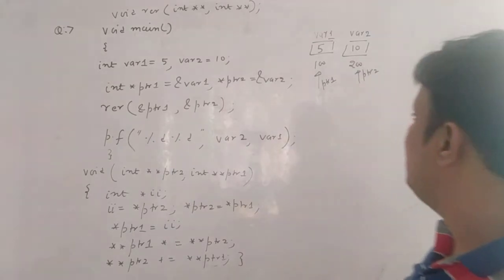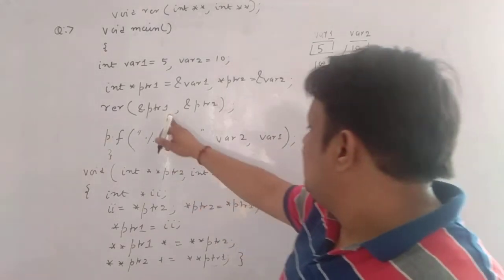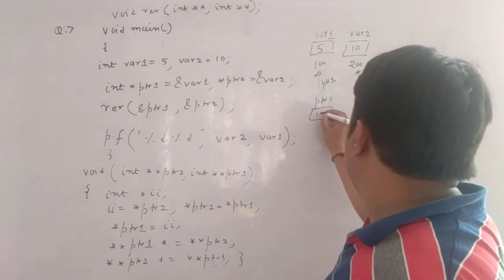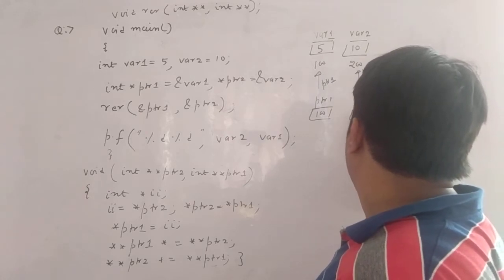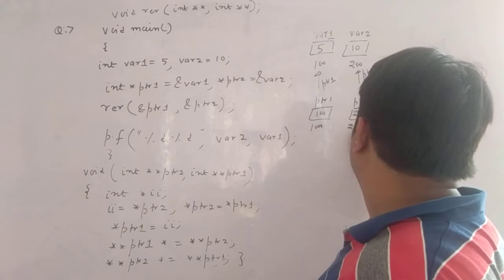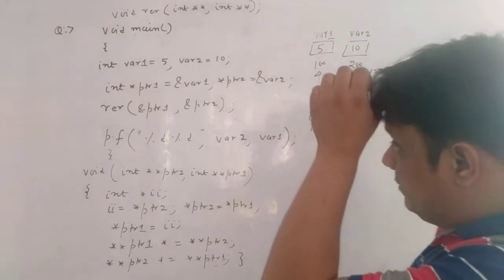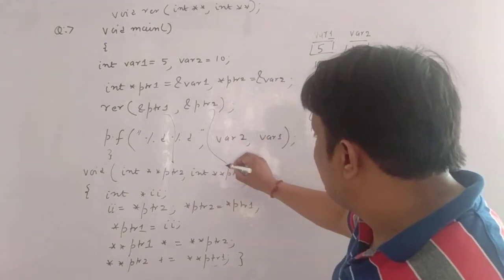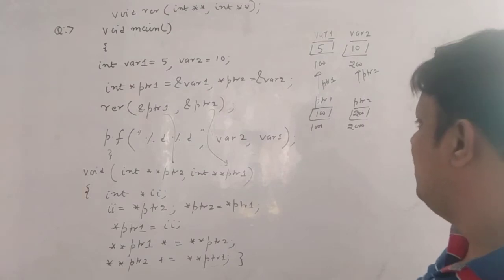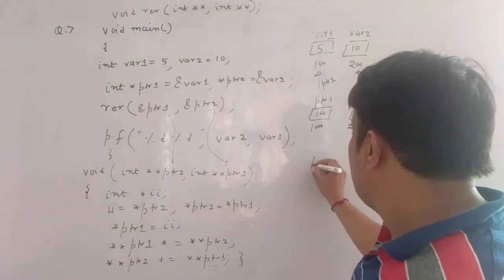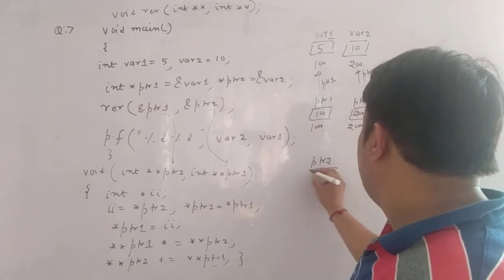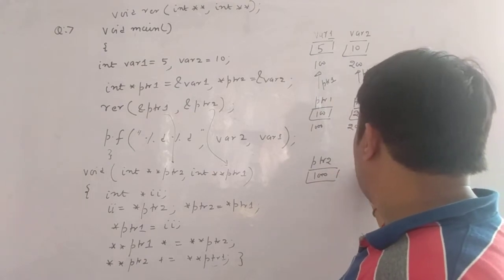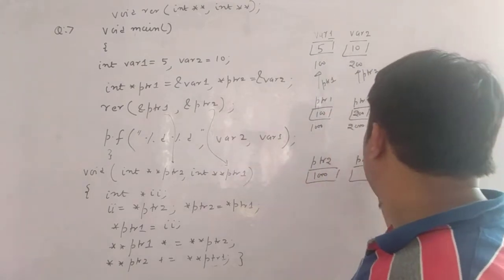You are passing the address of ptr1, and that is getting stored in ptr2. So ptr1's value is 100, ptr2's value is 200. Let's suppose the address of ptr1 is 1000 and the address of ptr2 is 2000. You are passing address of ptr1, that is getting stored in ptr2, and address of ptr2 is getting stored in ptr1. So ptr2 is now containing address of ptr1 which is 1000, and ptr1 is containing address of ptr2 which is 2000.